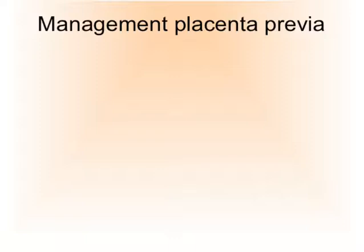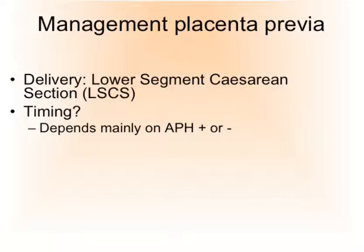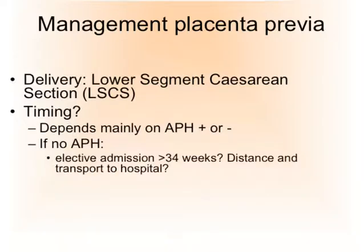What is the management of placenta previa? There is no obstetrician or midwife who would not agree that a placenta previa completely covering the os should result in delivery via a lower segment caesarean section. Regarding timing — ideally for the baby after 38 weeks and 5 days — but timing depends mainly on whether the pregnant woman has symptoms and signs of antepartum hemorrhage. If there is no APH, we would usually advise elective admission to hospital after, for instance, 34 weeks, so that if she has an antepartum hemorrhage she can be managed as safely as possible.